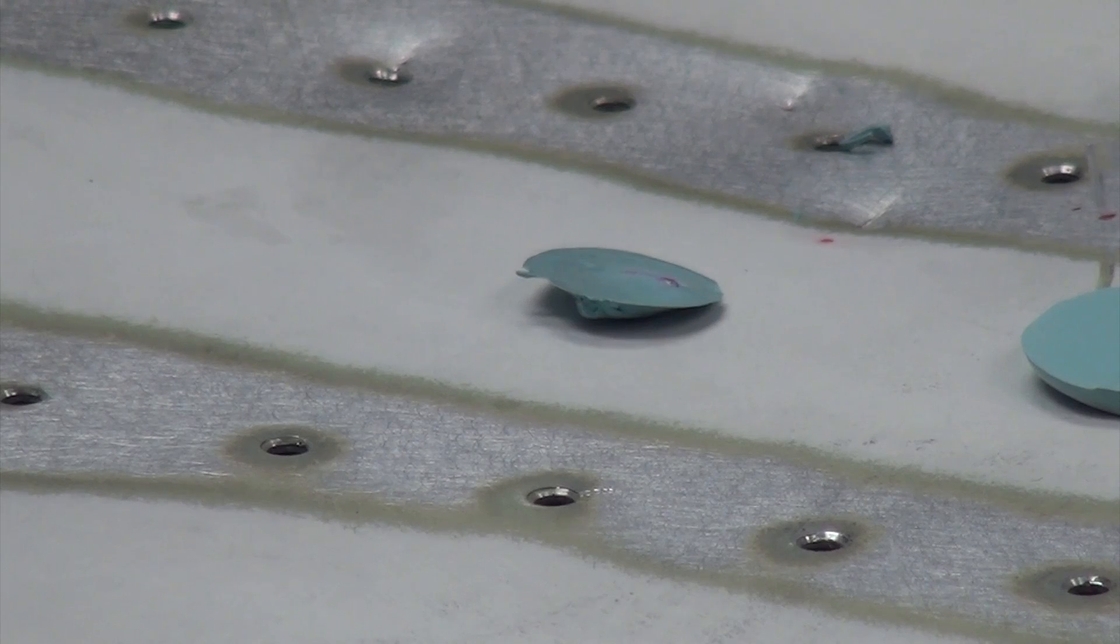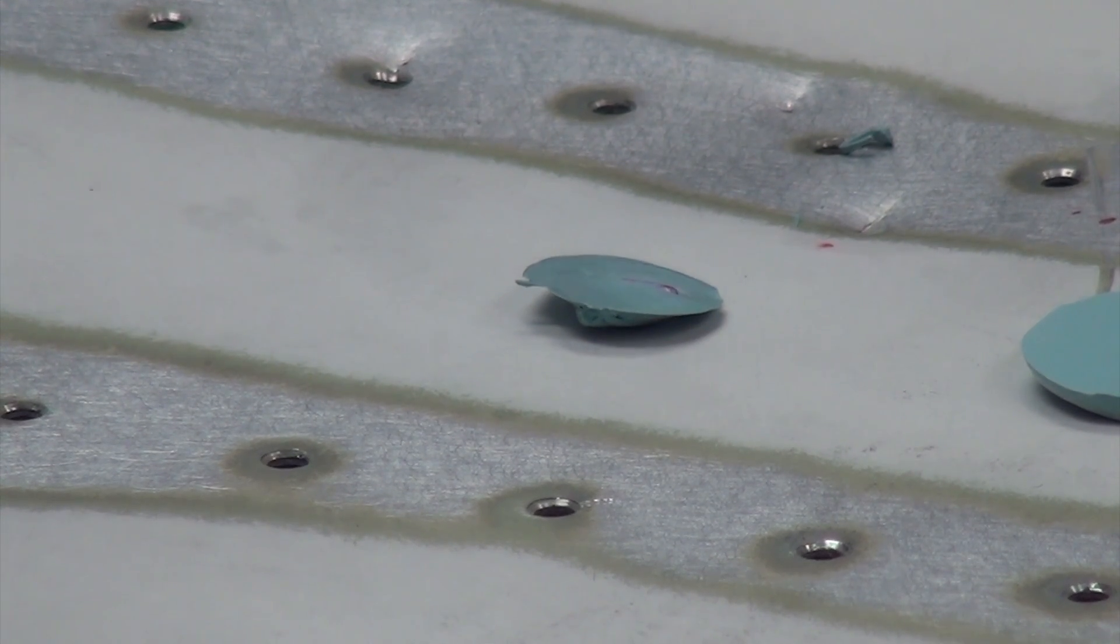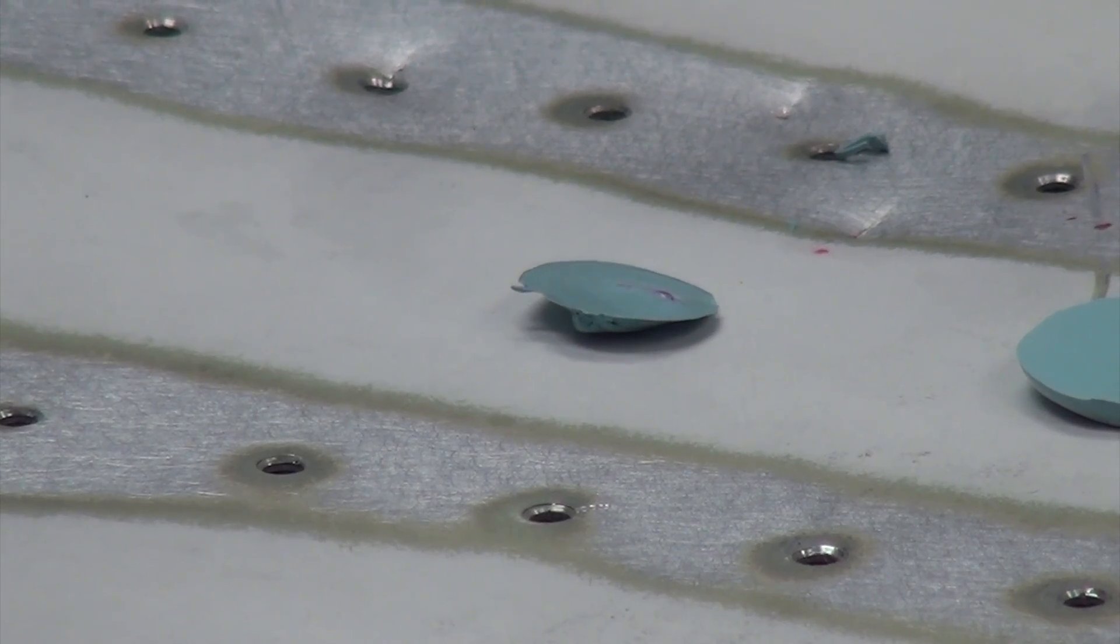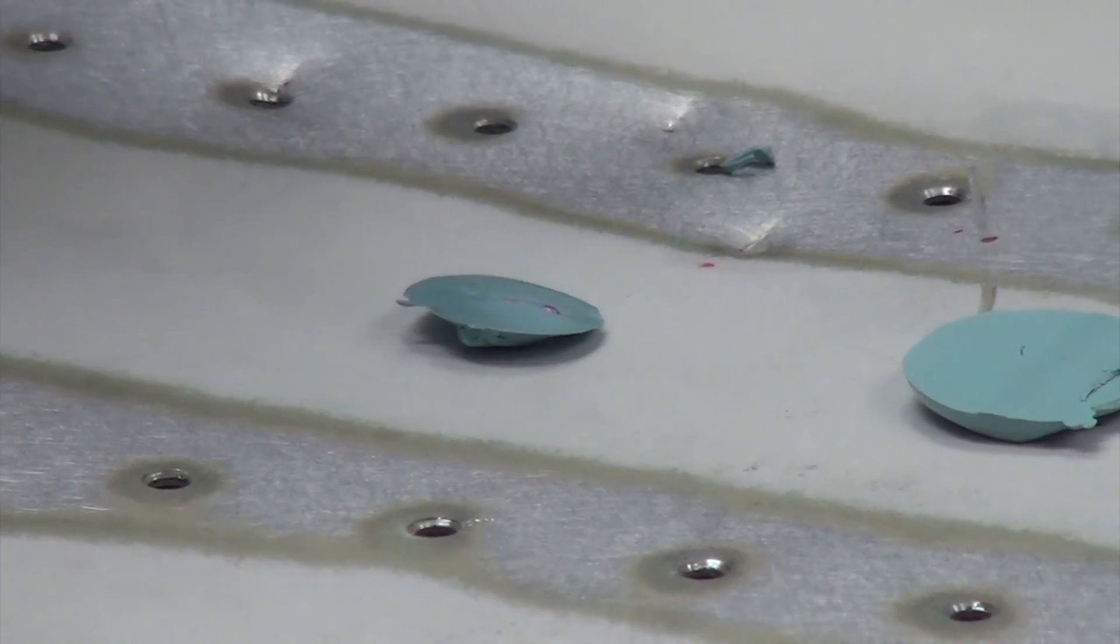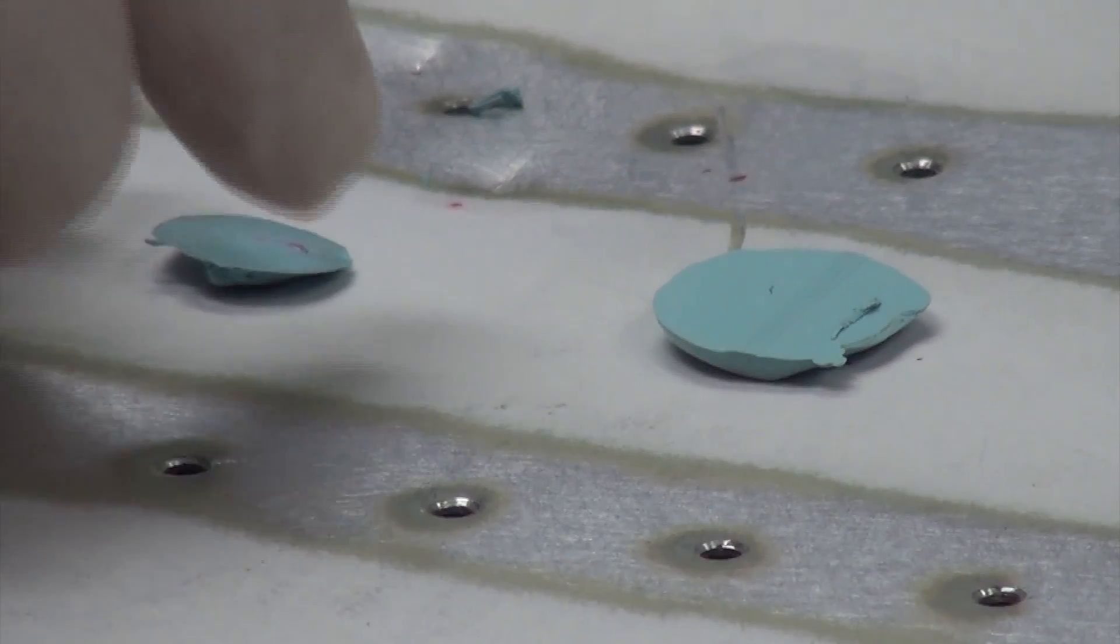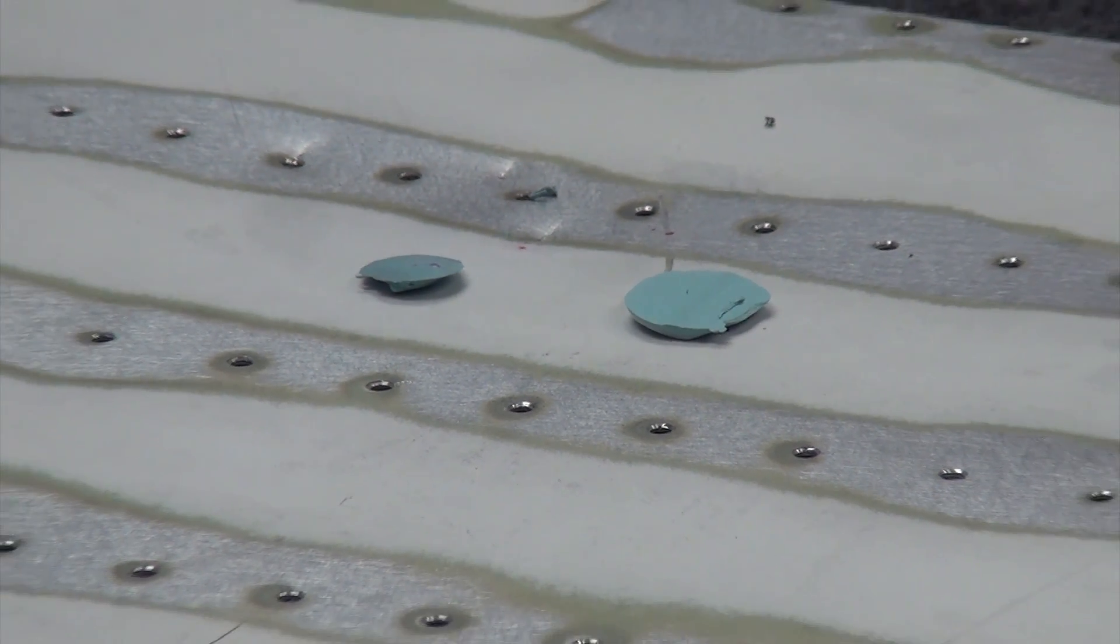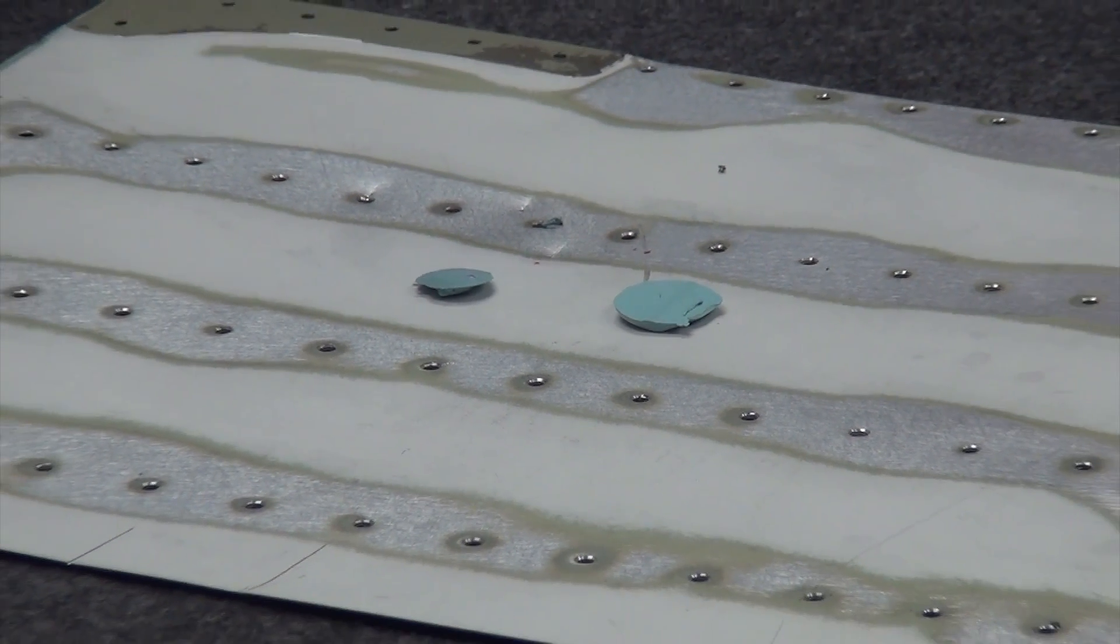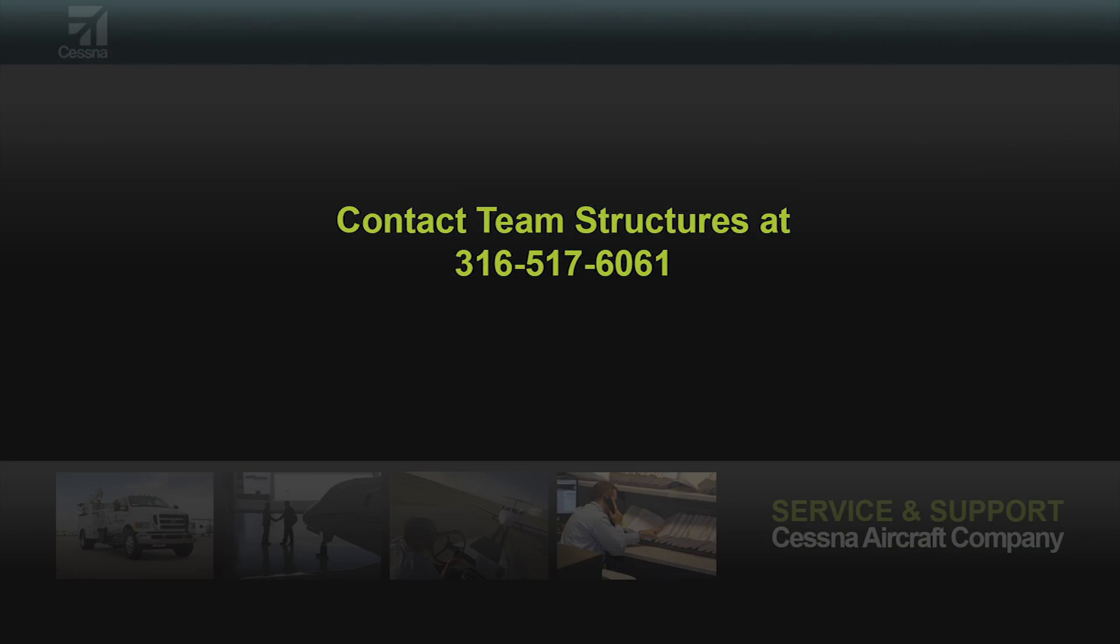In a future video we'll be measuring these, but today we're taking the mold impression. Remember the critical step of using a non-bonding film, and secondly, to be able to give it the profile that's workable for your optical mic. I hope you've enjoyed this video. If you have any questions or have any structural issues concerning your Cessna aircraft, give us a call at 316-517-6061. Thank you.